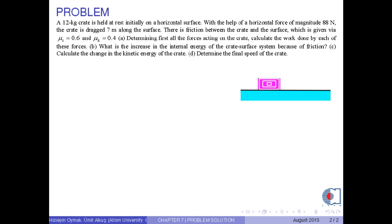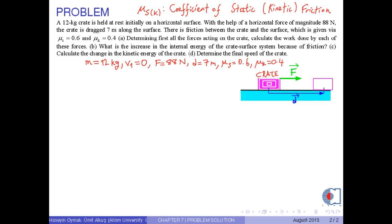A 12-kilogram crate is held at rest initially on a horizontal surface. With the help of a horizontal force of magnitude 88 newtons, the crate is dragged 7 meters along the surface. There is friction between the crate and the surface which is given via mu s as 0.6 and mu k as 0.4. Part A: Determining first all the forces acting on the crate, calculate the work done by each of these forces.